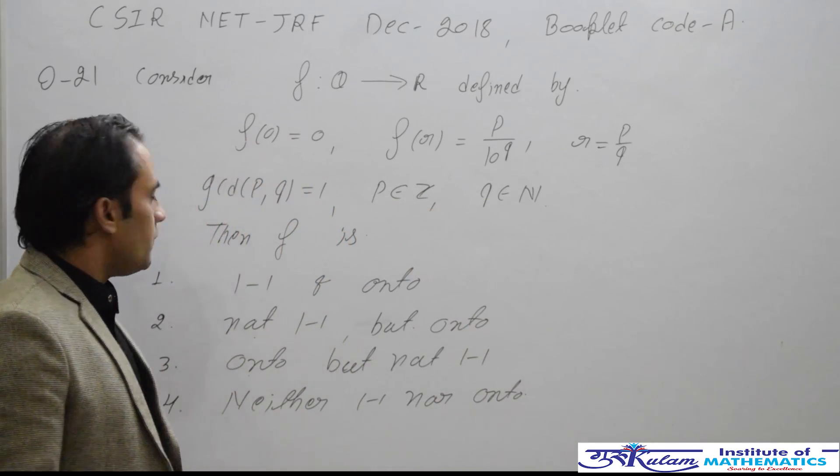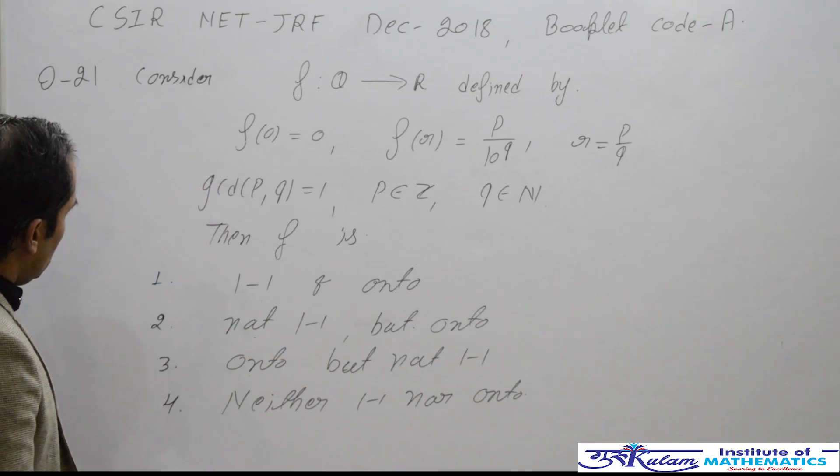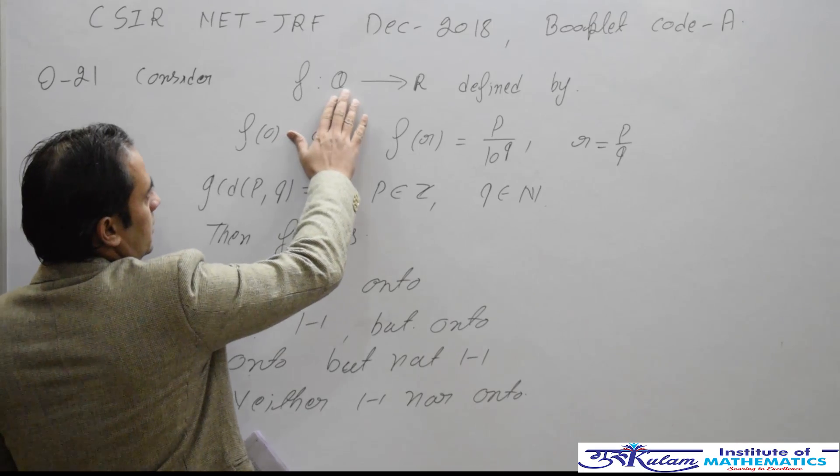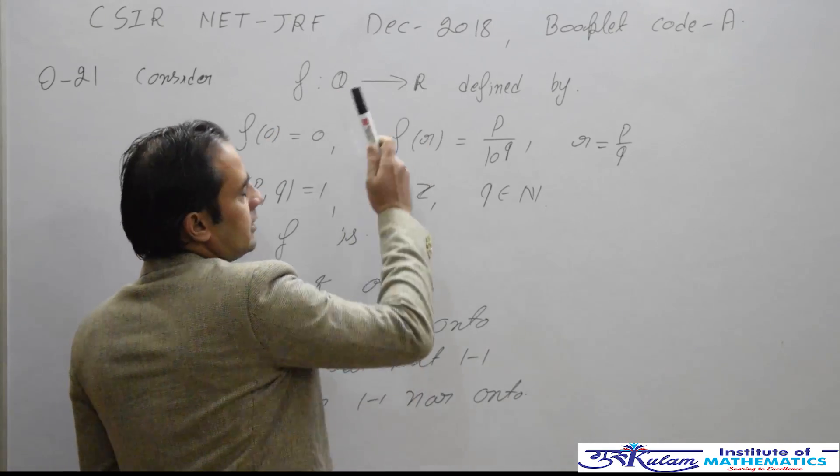We have to identify whether this given function is one-to-one or onto. Since the set of rational numbers is a countable set and the real line is an uncountable set,